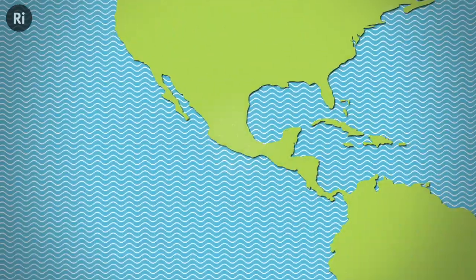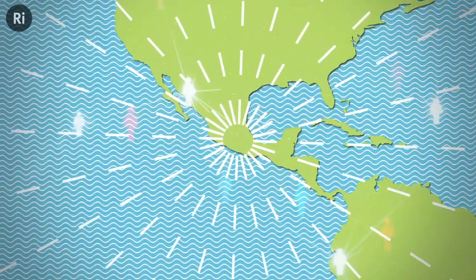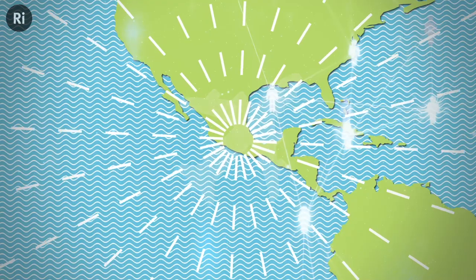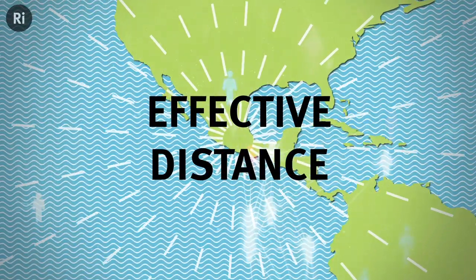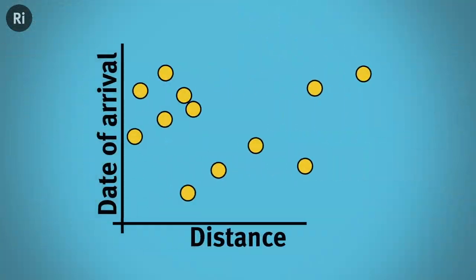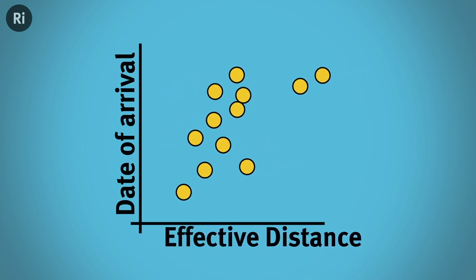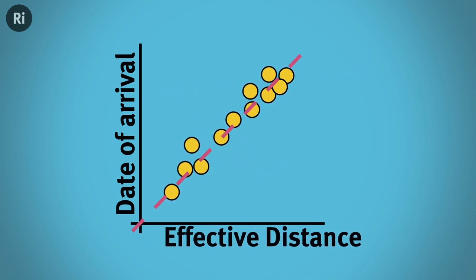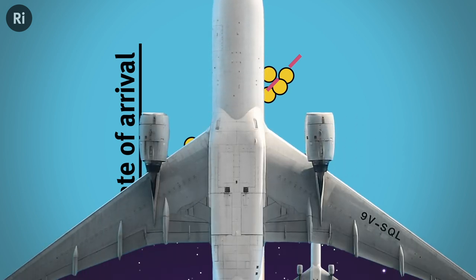However, scientists instead worked out how connected each country was to Mexico via the air travel network, and called this the effective distance. Plotting this effective distance against date of flu arrival in each country shows a really strong linear relationship, which suggests that the flu was traveling on planes country to country.